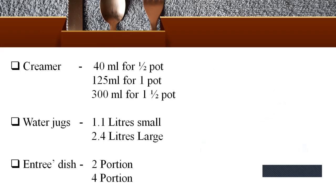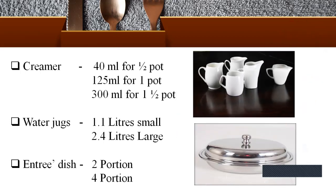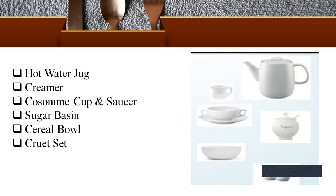Creamer is generally used for tea and coffee. The creamer sizes are: 40 ml for half pot, 125 ml for one pot, 300 ml for one and a half pot. We have the water jug used to serve water to the guest — one liter small or four liter large. The entre dish is in oval shape, available for serving one portion, two portions, or four portions. We also have the hot water jug, consomme cup and saucer — the consomme cup generally comes with two handles and an underliner — sugar basin, cereal bowl, and cruet set, generally used for salt and pepper on the table.